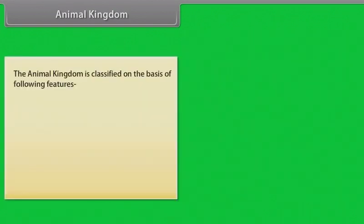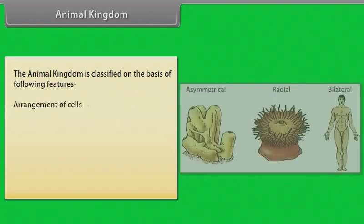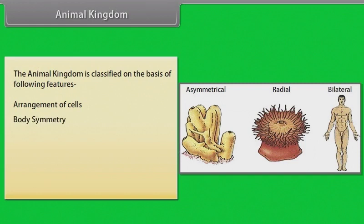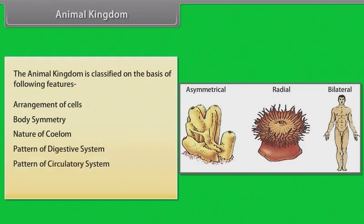The animal kingdom is classified on the basis of the following features: arrangement of cells, body symmetry, nature of coelom, pattern of digestive system, pattern of circulatory system, and pattern of reproductive system.